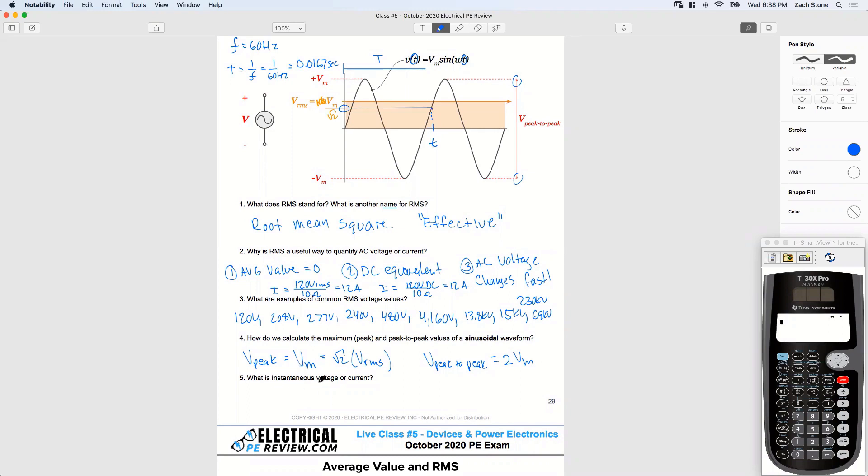So we can think of the instantaneous voltage or current as what I like to call an instantaneous function. V of T times our peak voltage times the sine function at omega T. And we can use this function to evaluate what's the actual voltage at an exact moment in time.